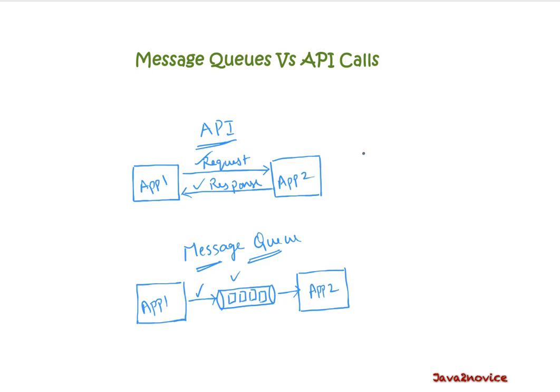Also understand that the publisher and subscriber model is different from the asynchronous processing we are discussing here. We will have a separate video on the publisher and subscriber model. At a very high level, publisher and subscriber is many-to-many, but message queues are many-to-one. We will have more details in our next video.